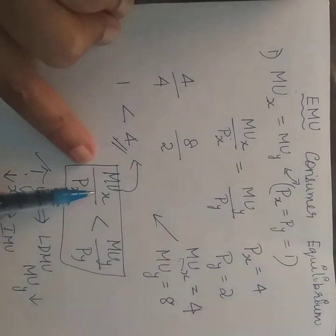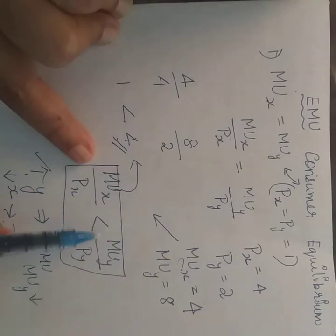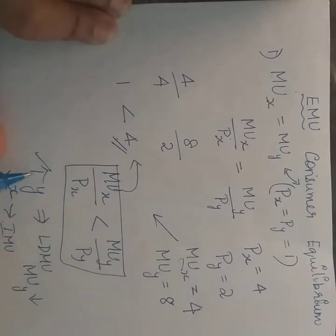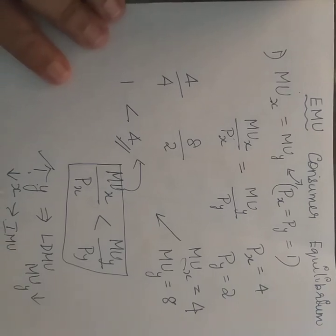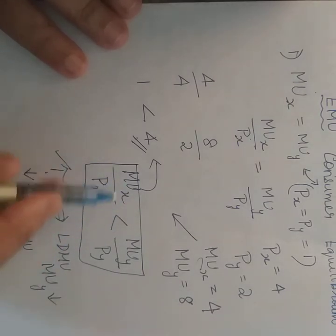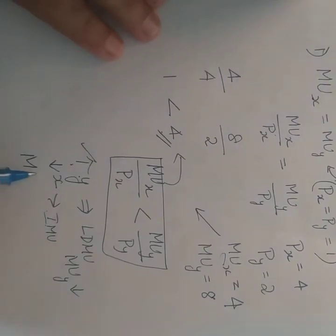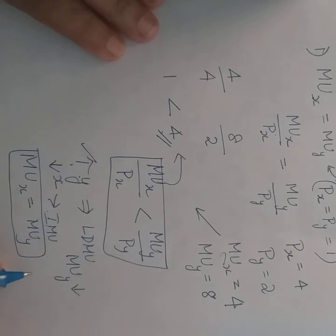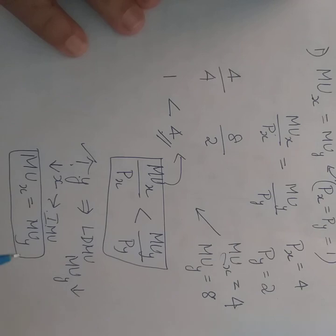In the case of X there was lesser satisfaction, and in the case of Y there was more satisfaction — that is why the consumer consumes more of Y. As consumption of Y increases, there will be diminishing marginal utility in the case of Y, and as consumption of X decreases, there will be increasing marginal utility in the case of X. This chain reaction will keep happening until the marginal utility of both products becomes equal, and that is where the consumer attains equilibrium.